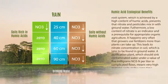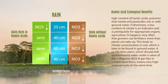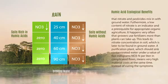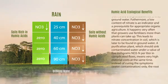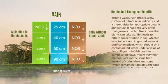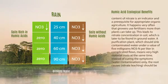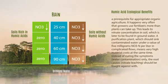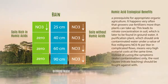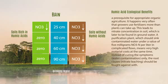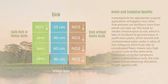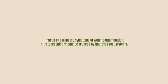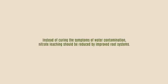Furthermore, a low content of nitrate is an indicator and prerequisite for appropriate organic agriculture. It happens very often that growers use fertilizers more than plants can take up, leading to nitrate concentration in soil, which is later found in ground water. A purification plant that should reduce contaminated water below 5 mg NO3-N per litre involves very high material costs. Instead of curing the symptoms — water contamination only — the root causes, nitrate leaching, should be fought against.